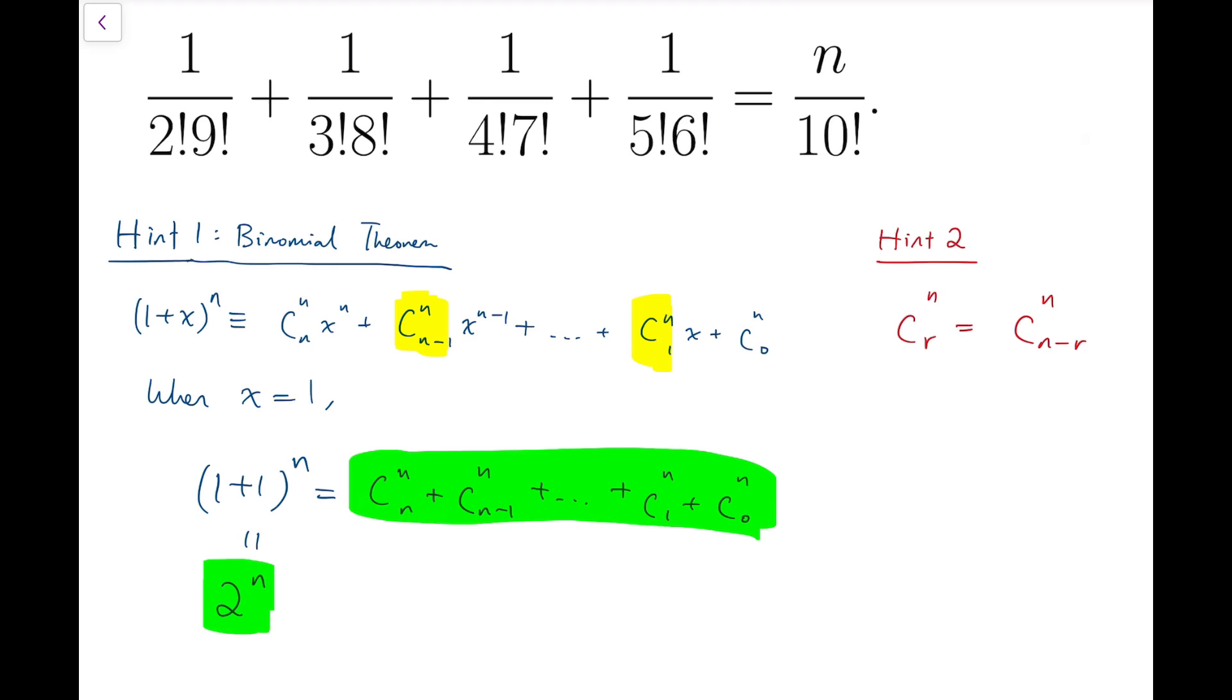That's the first fact we are going to use. The second one is that we are able to change one of the entries in the binomial coefficient. So n choose r is actually equal to n choose n minus r.